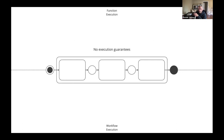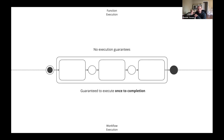A classical function execution doesn't give any execution guarantees. There is a possibility of partial execution — the function execution started, yet it did not complete; it fails, it crashes, it stops. The difference with the workflow execution is that the workflow execution is guaranteed to execute once to completion. With that, we now have an abstraction for distributed systems that allows us to successfully transition our system from one valid state to the next valid state.